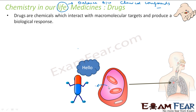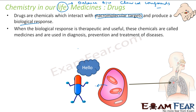Our body is made up of chemical compounds, and we have classified these into different types. Drugs are chemical compounds that interact with these macromolecular targets and produce a biological response. When this biological response is therapeutic — meaning it has a tendency to heal — these chemicals are then used for diagnosis, prevention, and treatment of a disease. In that case, these chemicals are called medicines.